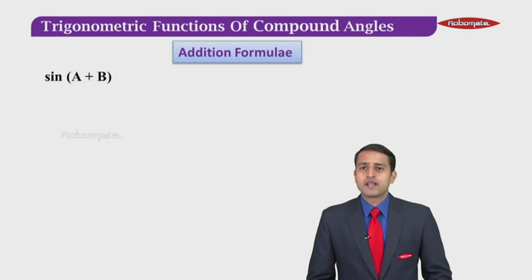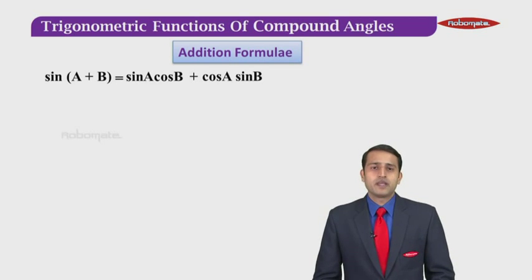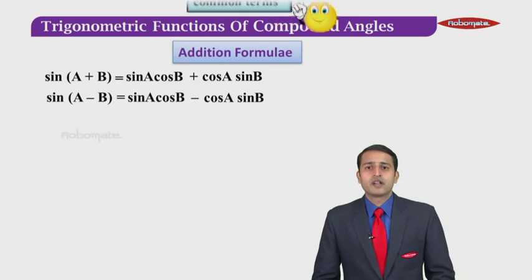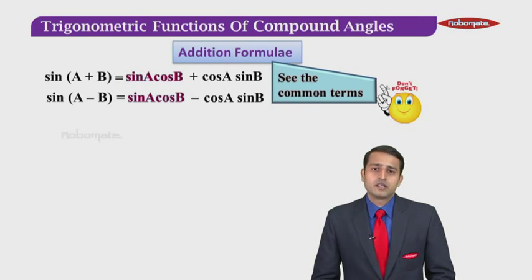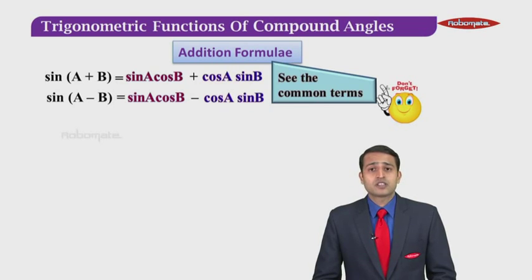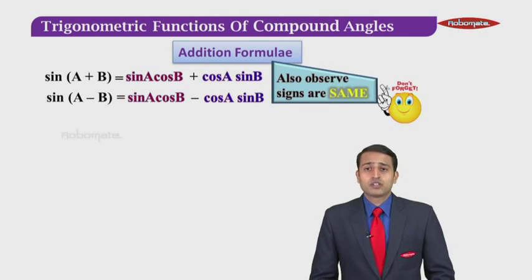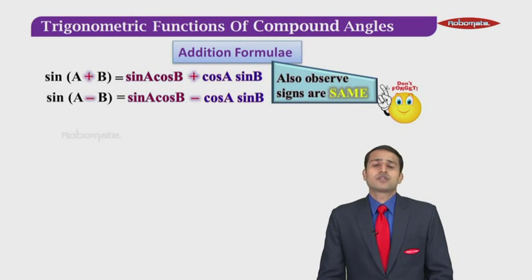To start with, let us look at sine of A plus B. Sine of A plus B is given as sine A cos B plus cos A sine B. Likewise, sine of A minus B is given as sine A cos B minus cos A sine B. Now you will wonder how to remember these formulas. The two formulas have sine A cos B which is common to both, and cos A sine B is common to both. The sign on both left-hand side and right-hand side is the same: plus for the first one and minus for the second one.